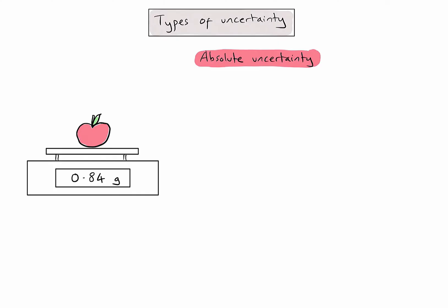Absolute uncertainty is defined by two scientific conventions depending on whether my measurement is using digital equipment or analogue equipment. In this case we have digital equipment, so the absolute uncertainty will always be plus or minus the smallest measurement we can make using this piece of equipment.